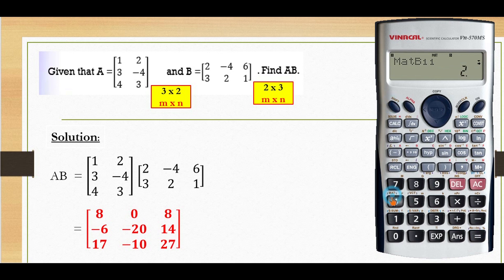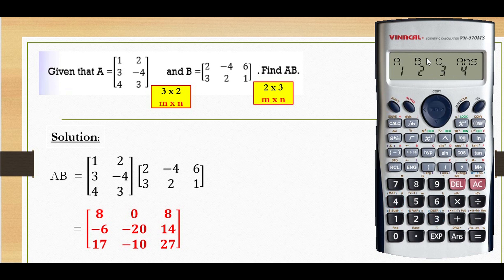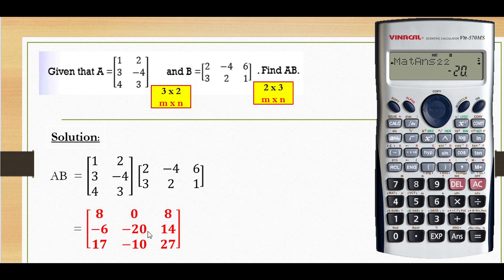Okay, after that I press shift for MAT, number 1, for matrix A — multiply with matrix B. Shift 4, number 3, then B is number 2. So matrix A multiplied by matrix B. The result: 1,1 is 8; 1,2 is 0; 1,3 is 8. Then 2,1 is negative 6; 2,2 is negative 20; 2,3 is 14. Then 3,1 is 17; 3,2 is negative 10; and the last one, 3,3 is 27.